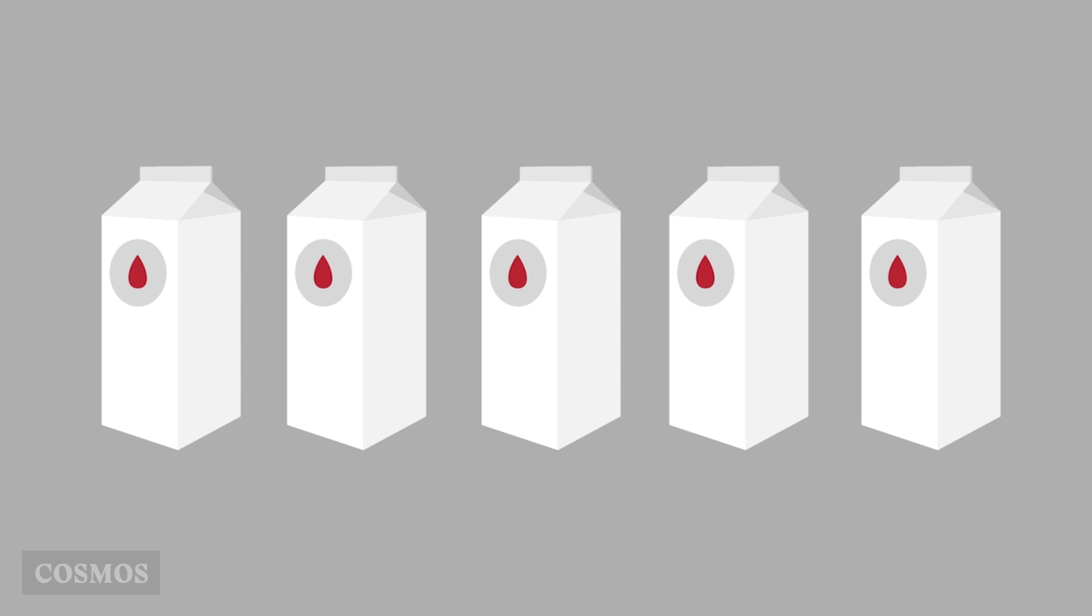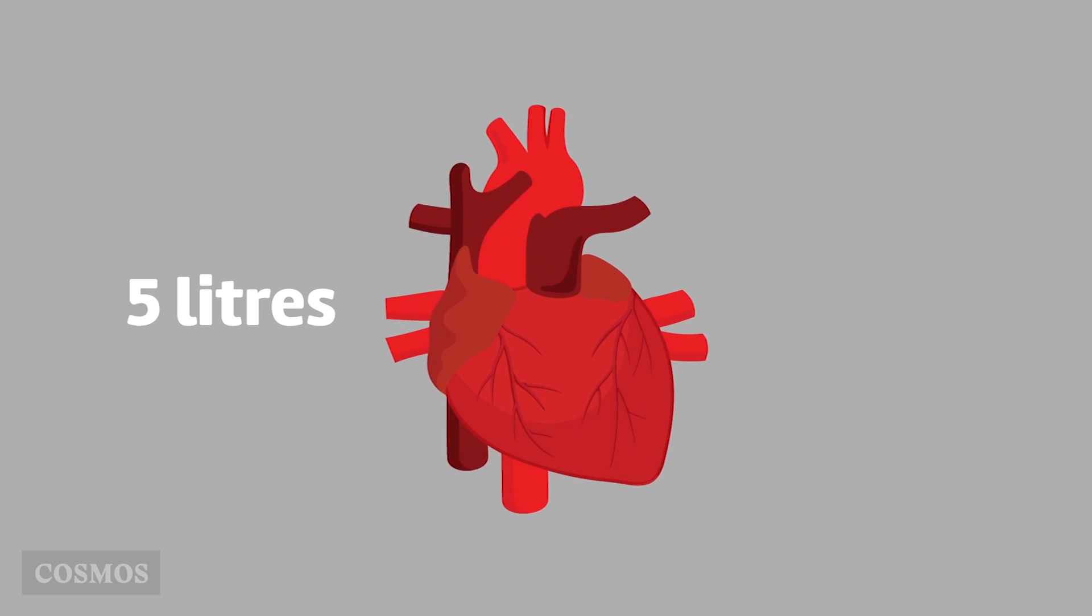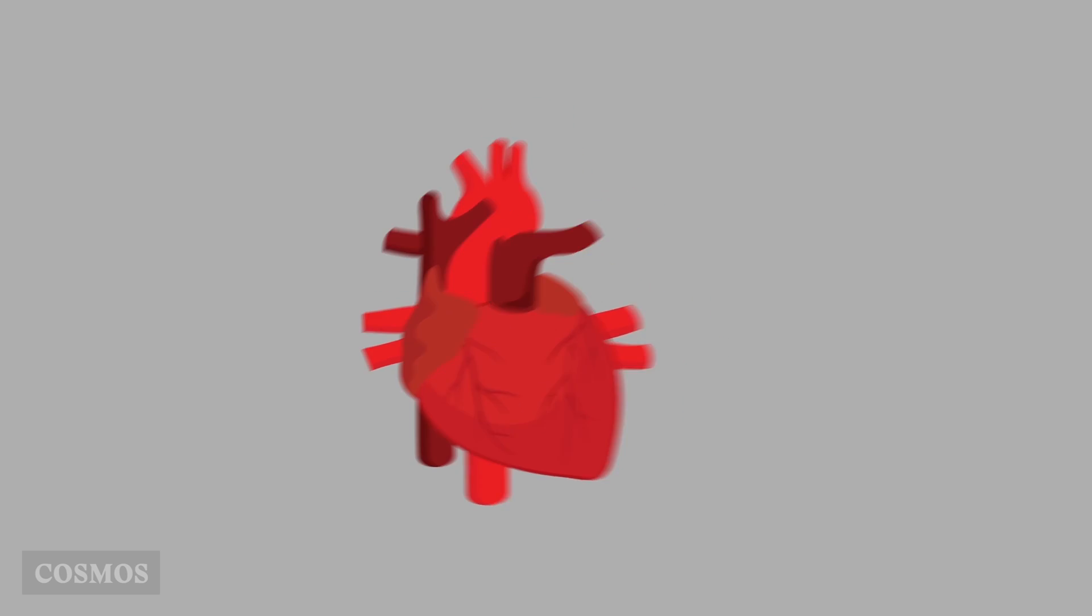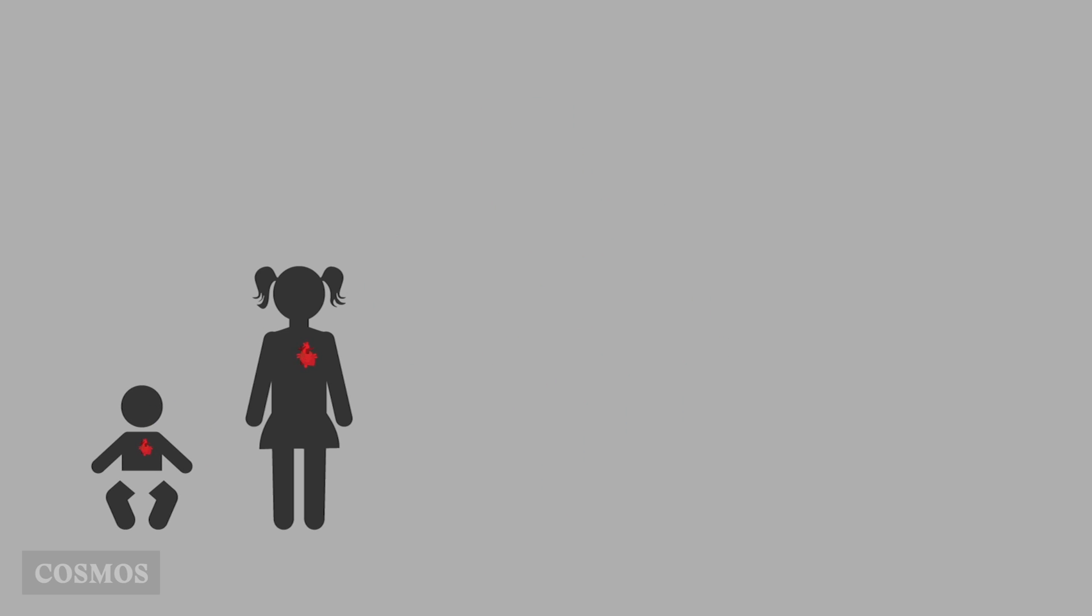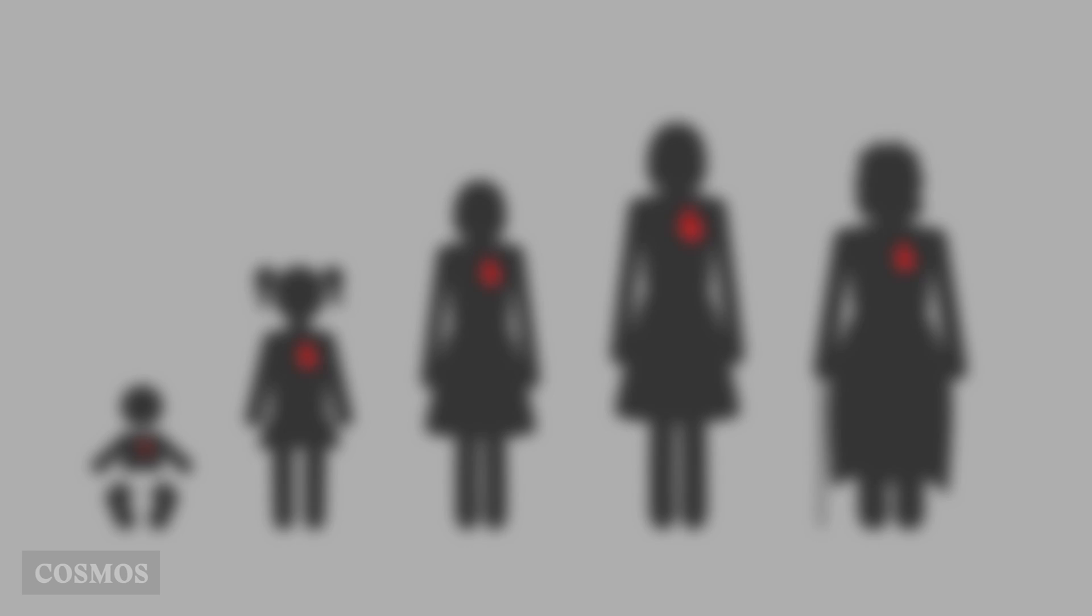The average adult has 5 liters of blood. When they're at rest, their heart pumps about the same amount, 5 liters, every minute. But this increases when they exercise. Whatever the rate, our hearts have to keep going non-stop to keep blood flowing for the whole of our lives.